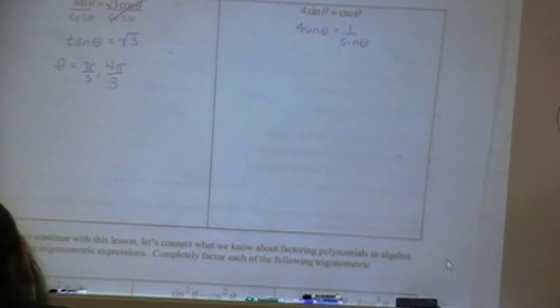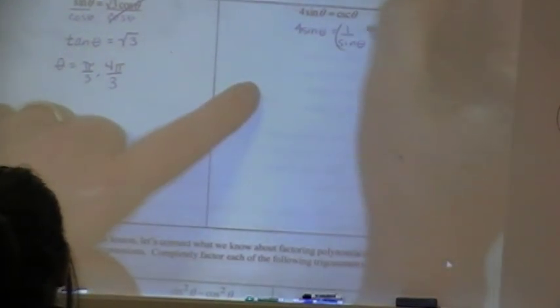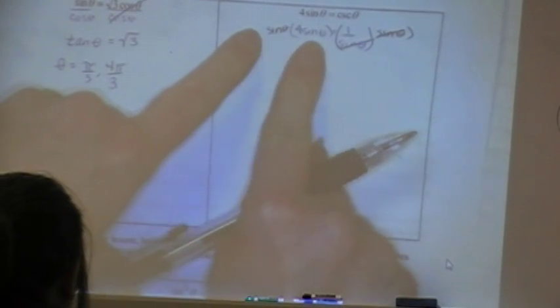I'm trying to solve for theta. And if I'm going to solve for theta, I need all my thetas together on the same side. So I'm going to multiply both sides by sine theta. Because that will clear this fraction off, and it will move my sine thetas all to the same side. So now I have sine theta times sine theta.